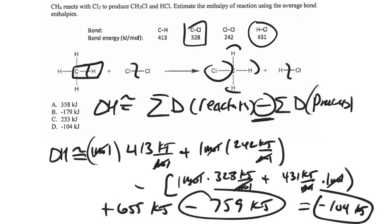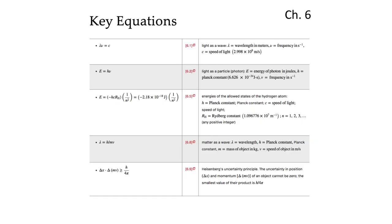If we flip this reaction, it would be endothermic because we'd break stronger bonds and form weaker bonds. Whether a reaction is exothermic or endothermic has everything to do with the relative strengths of the bonds in the reactants versus the products. Let's move into chapter six.